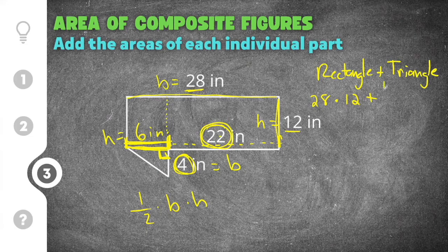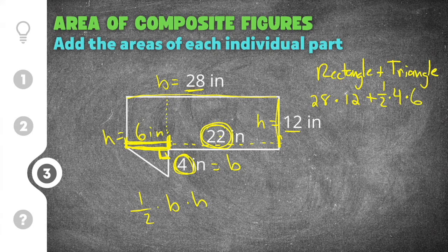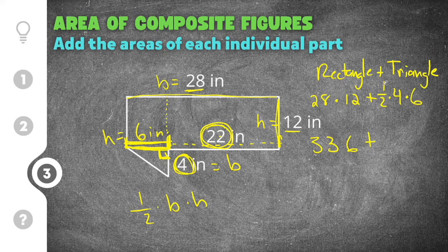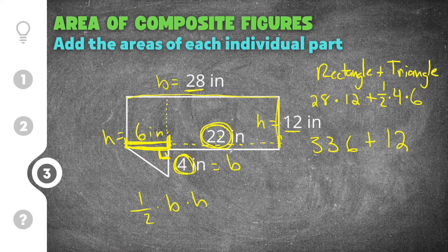The triangle's area is one-half times four times six. Finding each area: the rectangle is twenty-eight times twelve, which is three hundred and thirty-six, plus the triangle, which is one-half times four times six, giving us twelve. Adding those together: three hundred and thirty-six plus twelve equals three hundred and forty-eight.